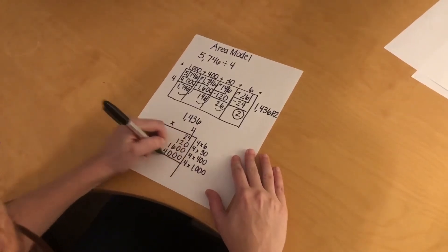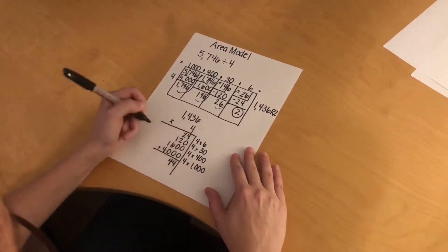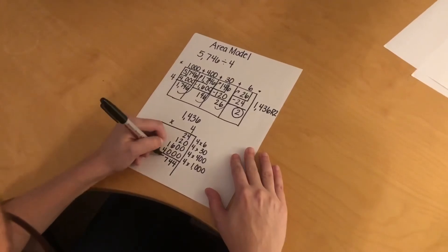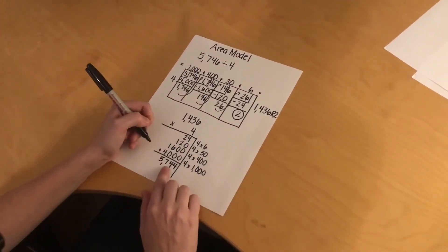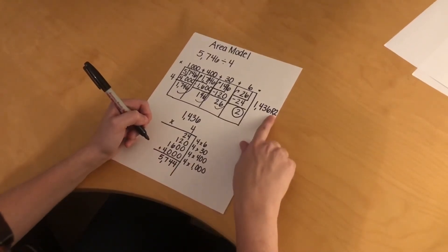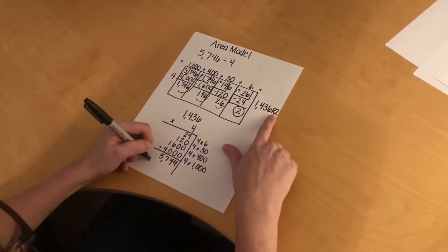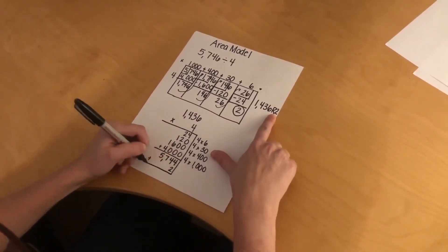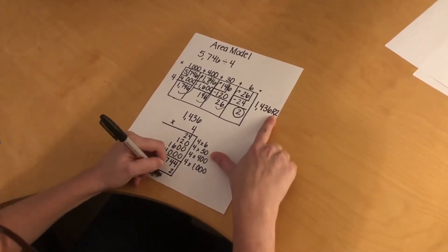And I add these numbers up, 4, 4, 7, 5, so I have 5,744. And then I need to add my remainder, which is 2, and I get 5,746.